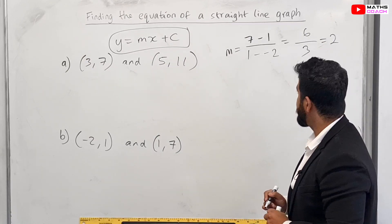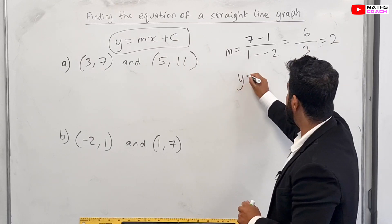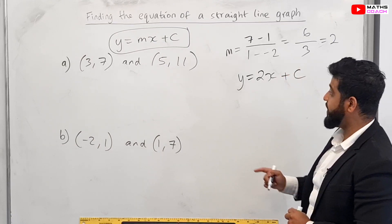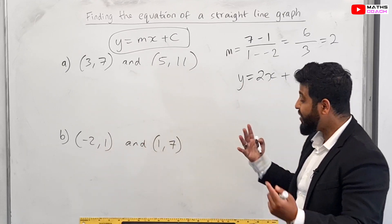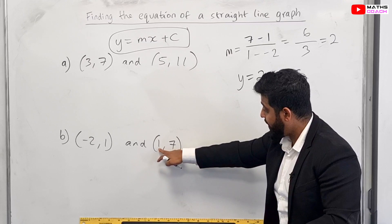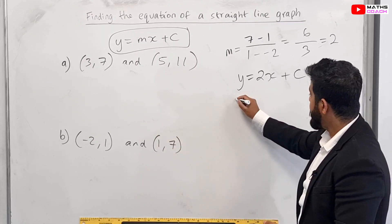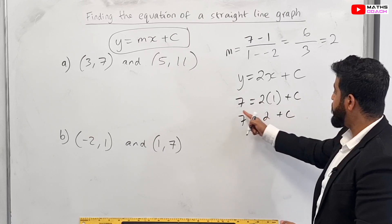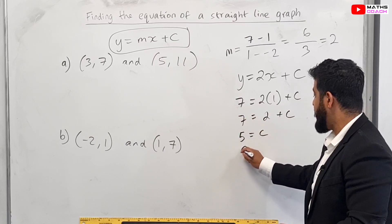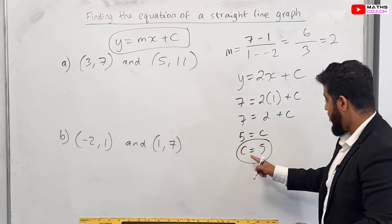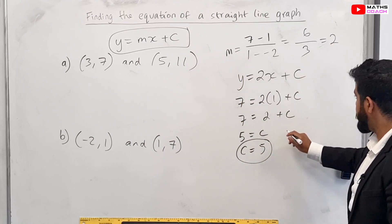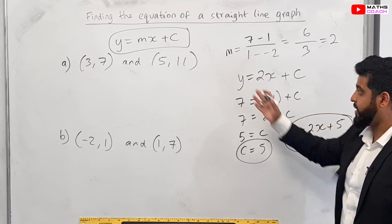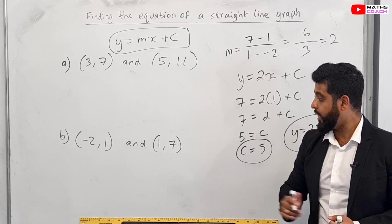So we have y = 2x + c, and we find c by substituting one of the coordinates. I'll pick (1, 7) as it looks easier. So 7 = 2 × 1 + c, giving 7 = 2 + c. Taking 2 to the other side: c = 5. Therefore the final equation is y = 2x + 5, and that is the equation of the line that goes through those two points.